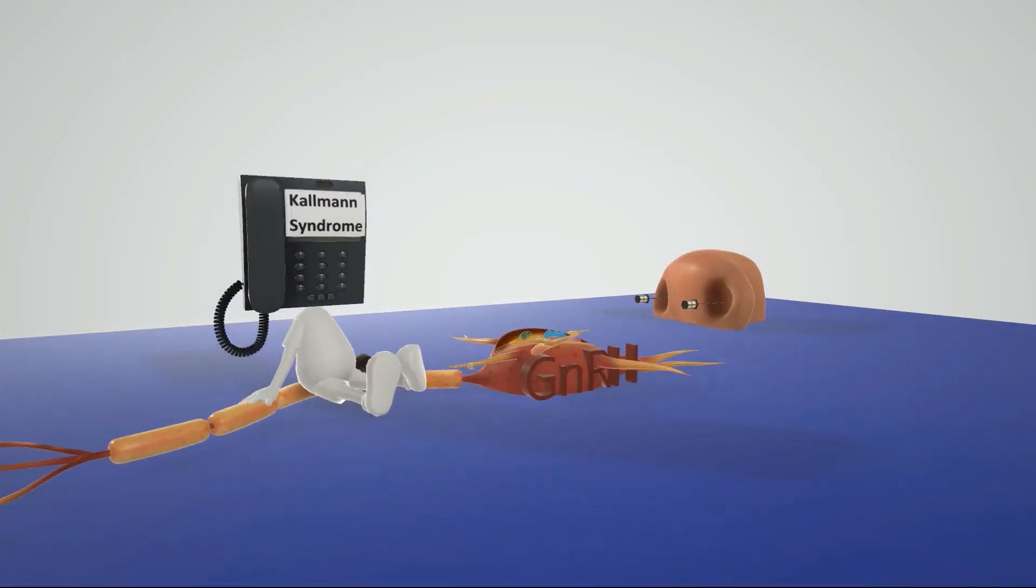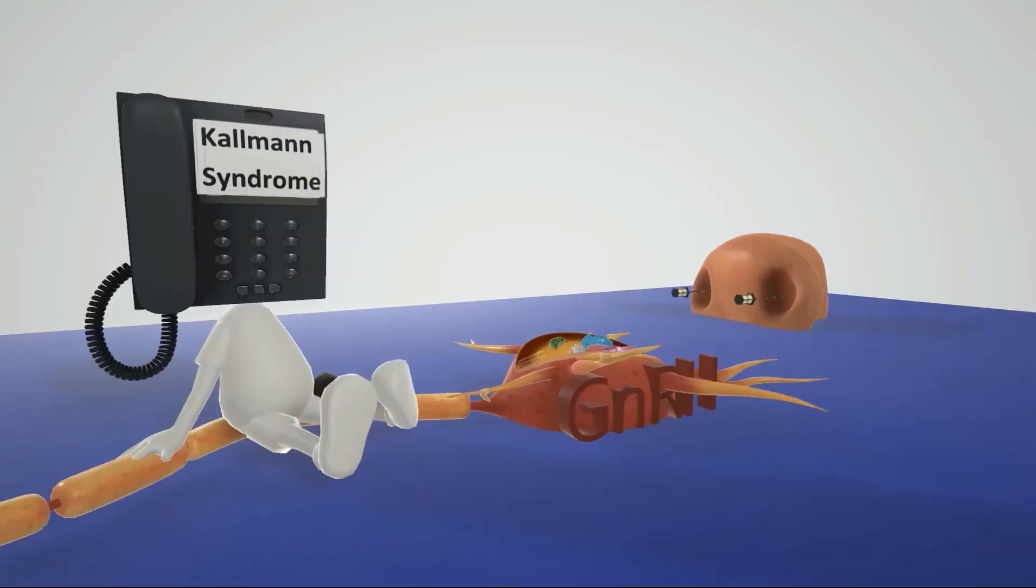Hey, welcome to our scene on Kallmann Syndrome, represented by the Call Man over here. His head is a phone, so he's the Call Man, and as he said before, he has not completed puberty despite his age. Kallmann Syndrome is described by a failure to complete puberty, and it is a form of hypogonadotropic hypogonadism. So let's talk about this disease.